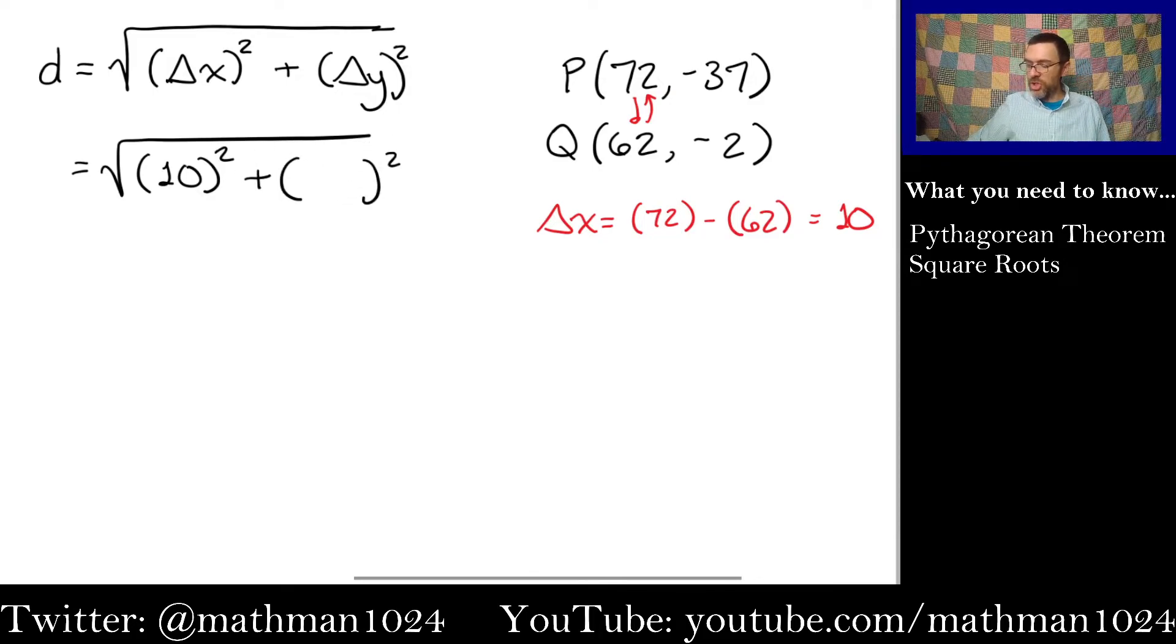Now, when it comes to the change in y, we can do it in the same order, so negative 37 minus negative 2, so you've got to pay very close attention to your signs, and here the minus negative becomes a plus, so you would end up with negative 37 plus 2, which gives us a change. Here it says negative 35, but again, the sign doesn't really matter so much because you're going to be squaring it at the end. So, as you go from negative 37 to negative 2, a gain of 35, that would go from negative 2 to negative 37, you'd actually be going down 35 units. So, all in all, your change in y is 35.